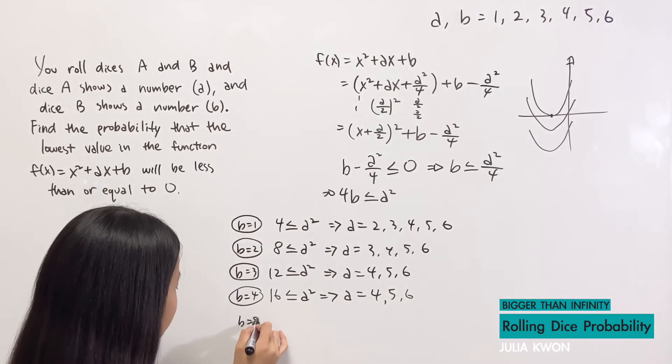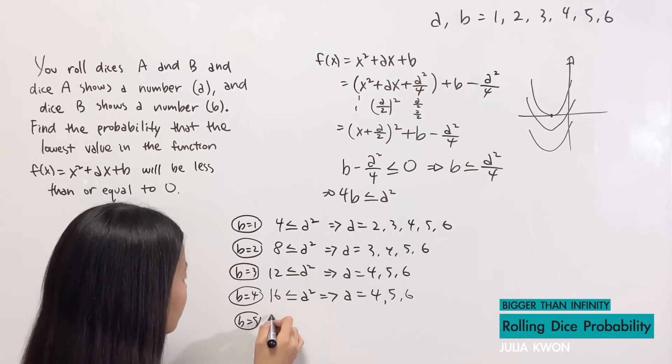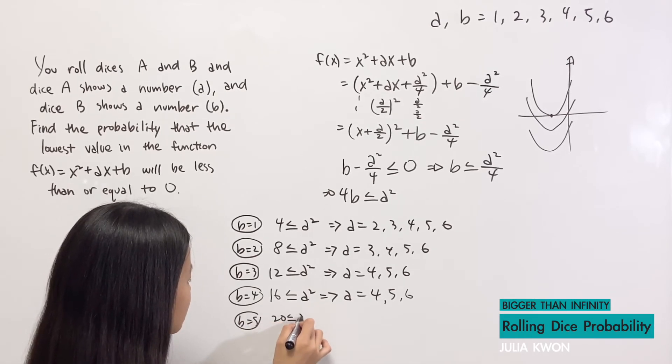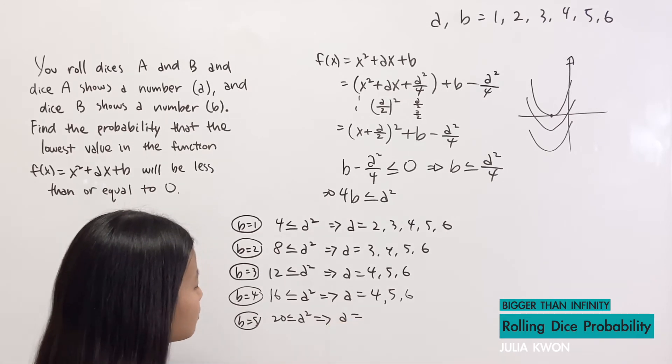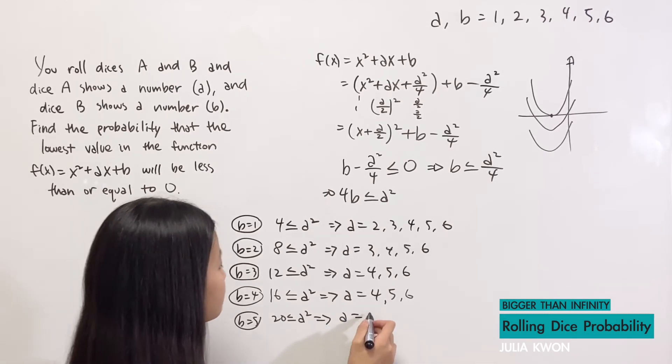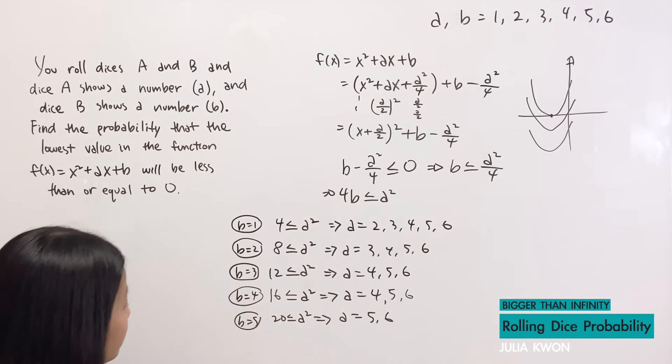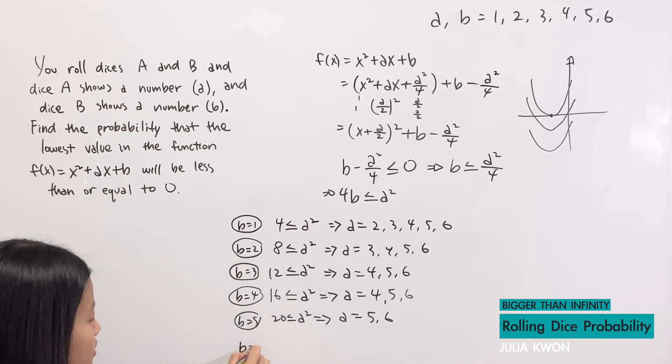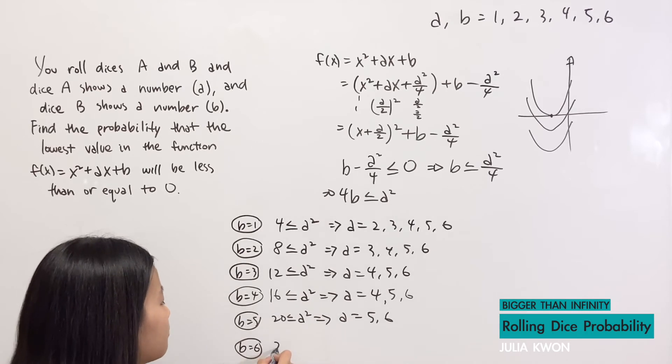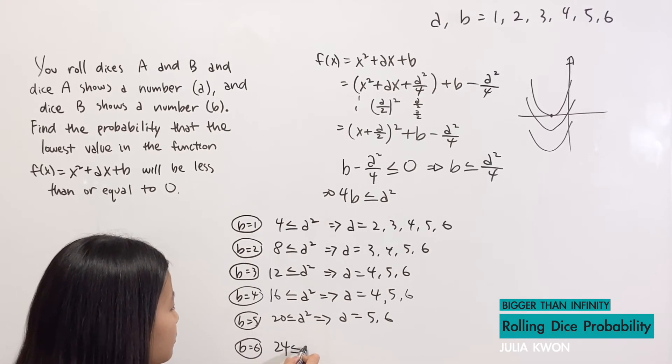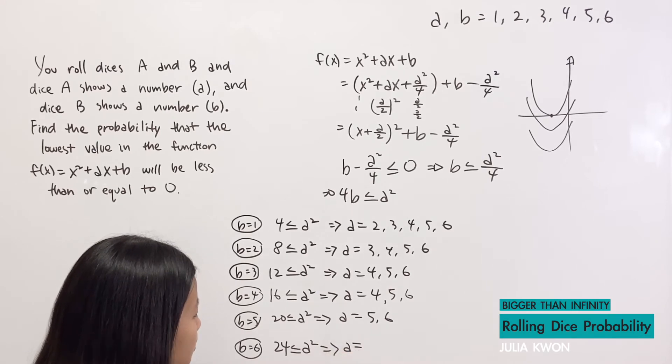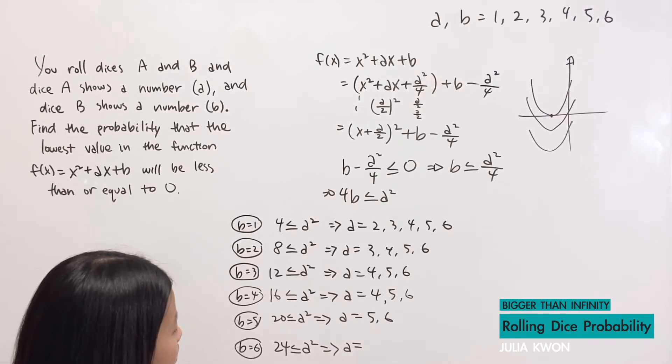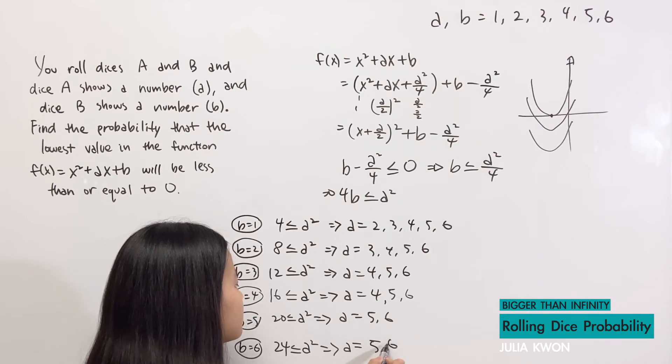If b equals 5, then 20 will have to be less than or equal to a², and a will have to equal 5 and 6. If b equals 6, then 24 will have to be less than or equal to a², which means that a can equal 5 and 6.